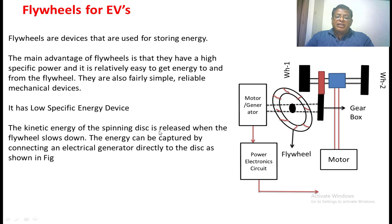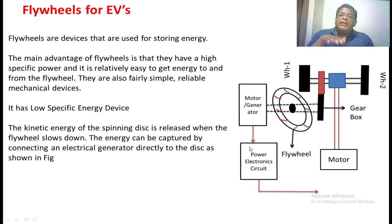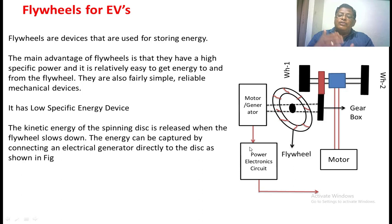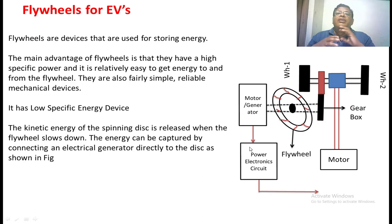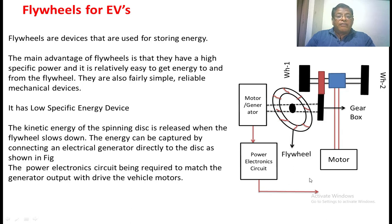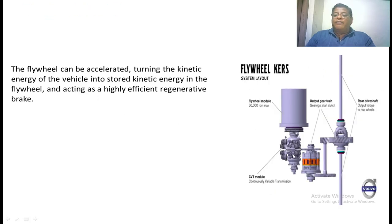The kinetic energy of a spinning flywheel is released when it slows down. When the vehicle goes downhill, speed increases due to gravitational force, the wheels rotate, and energy is transferred to the flywheel. A generator connected to the flywheel generates voltage. If we use that voltage to charge the battery, we are applying regenerative braking to the electric vehicle. A suitable power electronic circuit is required to match the voltage generated by the generator to the driven motor.